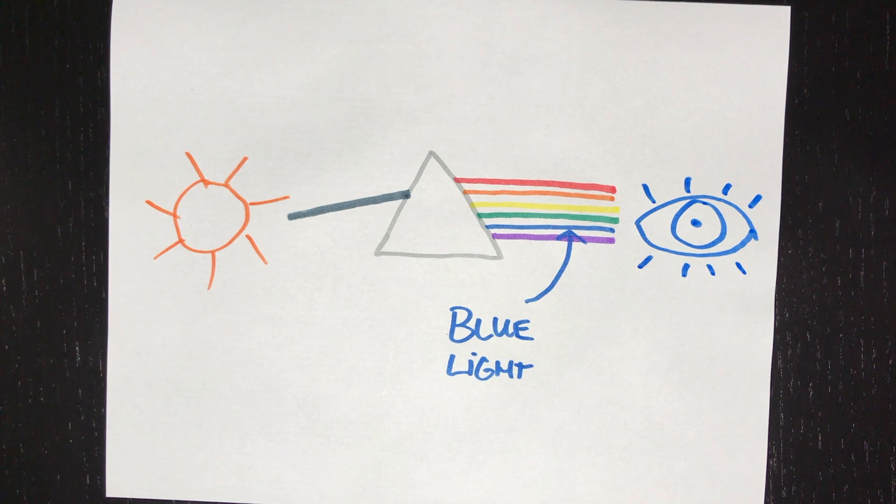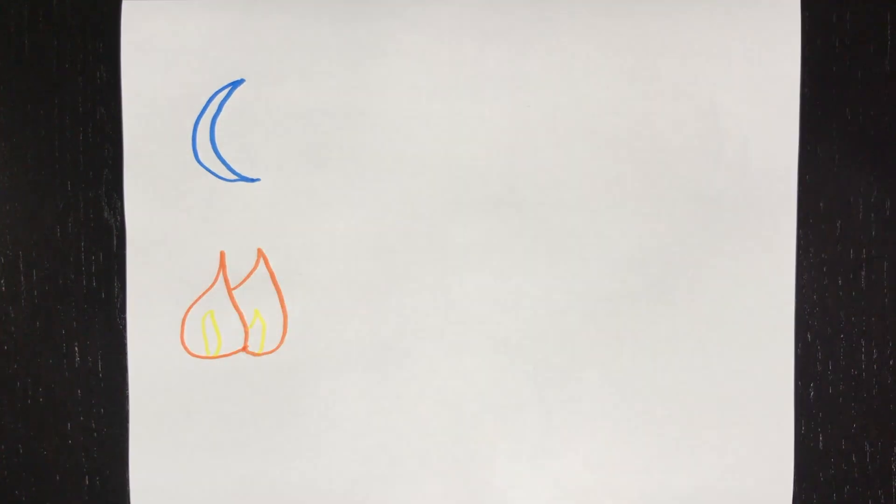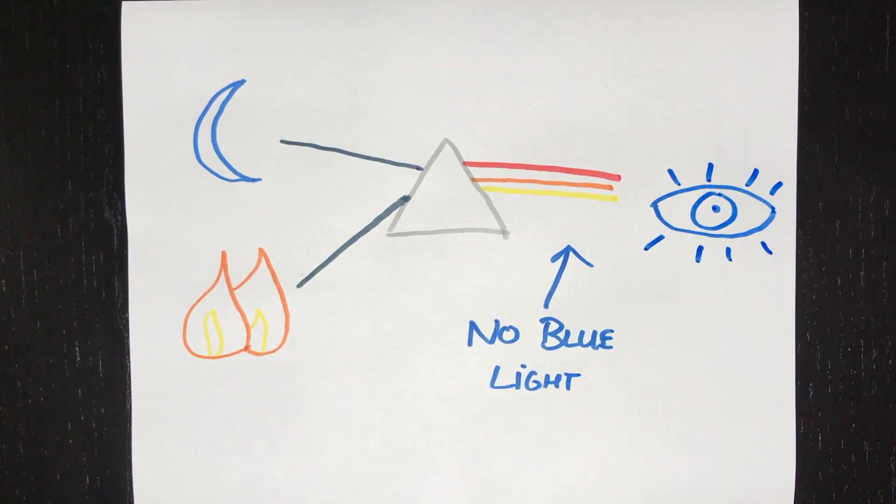In my review of the Philips Scene Switch, I explained how circadian lighting works. Check out the link below or at the end of this video for more information.